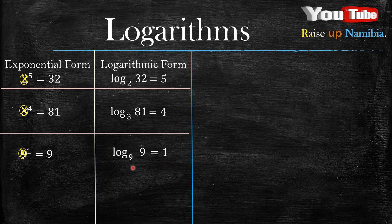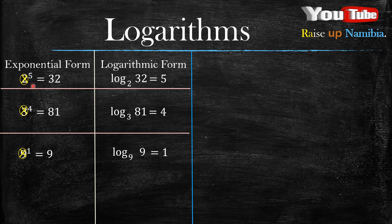Basically, with logarithms you ask: to what number do you need to raise this 2 to get 32? You raise it to the 5th power to get 32 — which is the same as saying in exponential form it's 2 raised to the power 5 equals 32. So in logarithmic form you can ask yourself: to what power do I need to raise 2 to get 32? The answer is 5. Similarly, to what power do you need to raise 3 to get 81? To the 4th power — hence 3 raised to the power of 4.